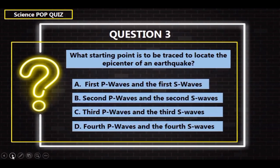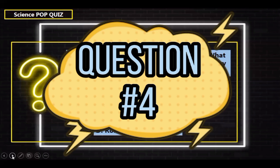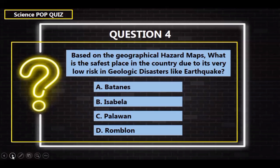Question number 3: What starting point is to be traced to locate the epicenter of an earthquake? A. First P-waves and the first S-waves, B. Second P-waves and the second S-waves, C. Third P-waves and the third S-waves, D. Fourth P-waves and the fourth S-waves. The correct answer is letter A — First P-waves and the first S-waves. Question number 4: Based on the geophysical hazard maps, what is the safest place in the country due to its very low risk in geologic disasters like earthquakes? A. Batanes, B. Isabela, C. Palawan, D. Romblon. The correct answer is letter C — Palawan.